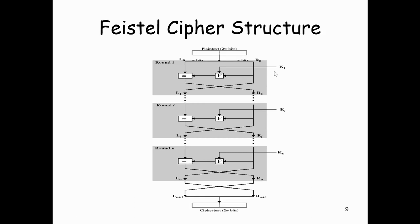We apply an encryption function F that takes two inputs: the key K and R. The function produces the output F(R, K). Then we XOR the output of this function with L. In real implementations of the Feistel cipher such as DES, instead of using the whole encryption key during each round, a round-dependent sub-key is derived from the encryption key, so each round uses a different key.